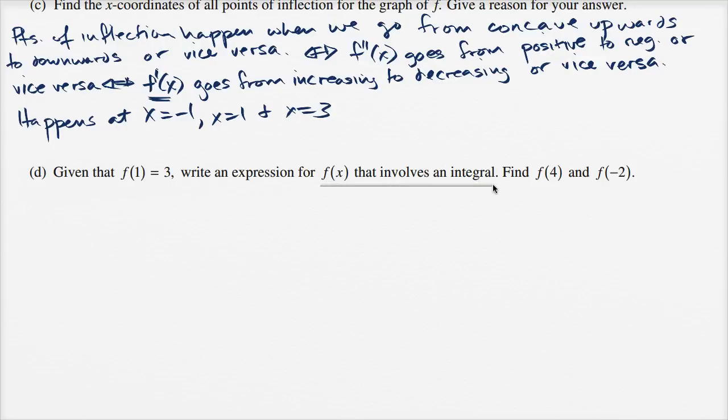Since it involves an integral, we can assume it's going to involve f prime somehow, especially since they've given us so much information about f prime, including its graph and the area under or above the curve at different intervals, and then they want us to find f of four and f of negative two.